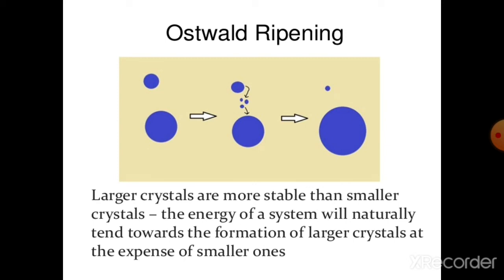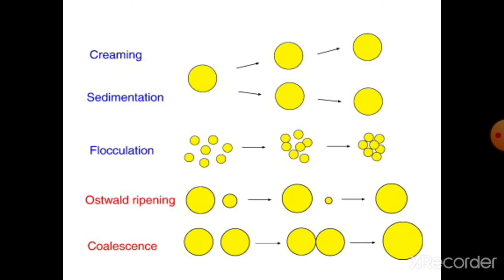In this picture, you can see the Ostwald ripening phenomenon: the small particle is utilized for the formation of larger particles — the kinetic energy of the smaller particle is totally used for the formation of a larger crystal, which is more stable than the smaller crystal. We can also differentiate related terms: sedimentation, Ostwald ripening — where small particles are simply utilized for the formation of bigger particles — and coalescence, where two or more particles simply merge together to form one bigger molecule.